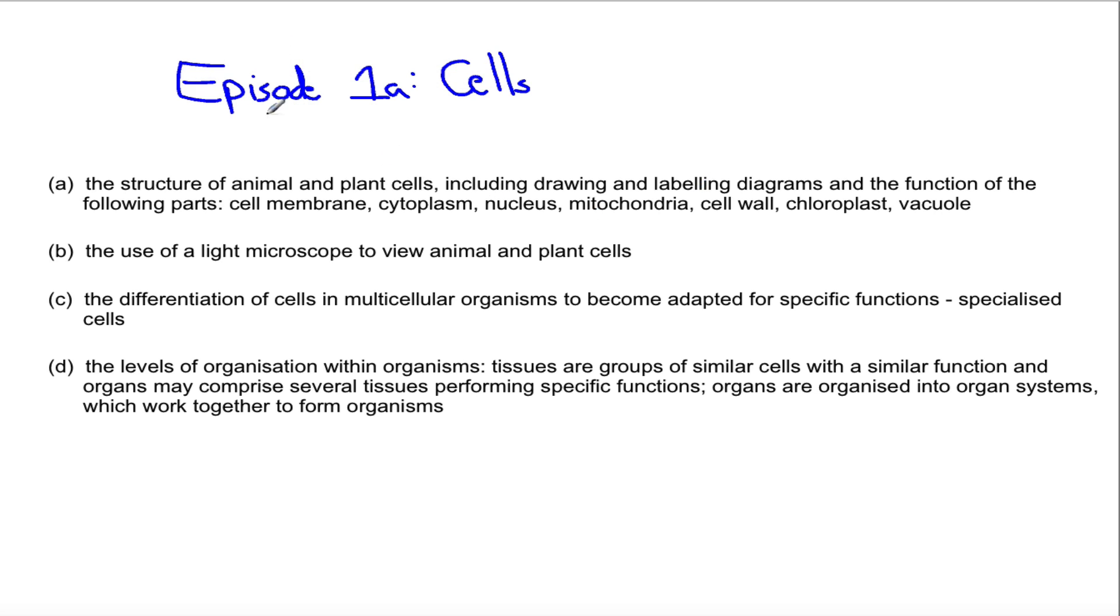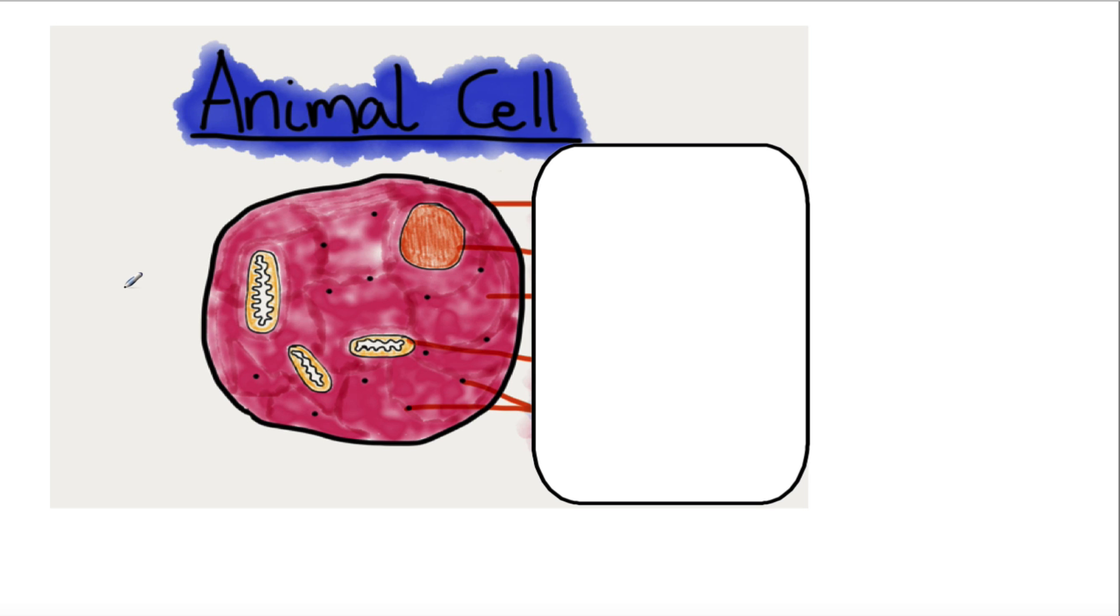So we're going to go straight into this, looking at the structure of the animal cell. Now straight away I'm going to say at the start, I've created the pictures that we're going to be looking at using an app called either Paper 53 or Procreate. And I've gone a little bit crazy with the colors, so please don't finish watching this video thinking that the colors that you're going to see are the actual colors. It's just me playing about with the apps on the iPad.